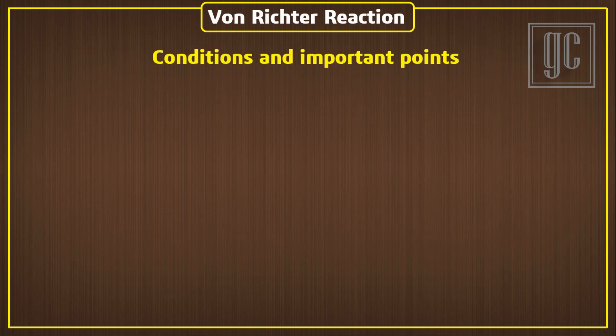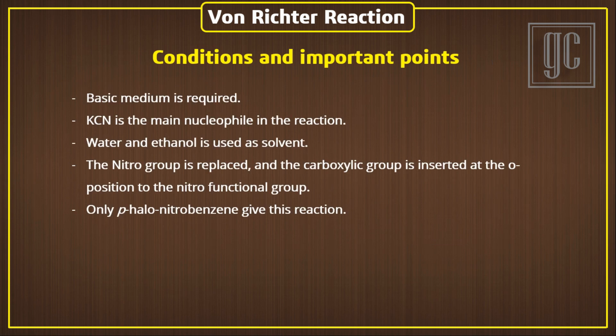The conditions and important points of the reaction: Basic medium is required for the reaction. Potassium cyanide is the main nucleophile in the reaction, and also acts as a base. Water or ethanol is used as solvent. The nitro group is replaced, and the carboxylic group is inserted at the ortho position to the nitro functional group. Only parahalonitrobenzene gives this reaction.